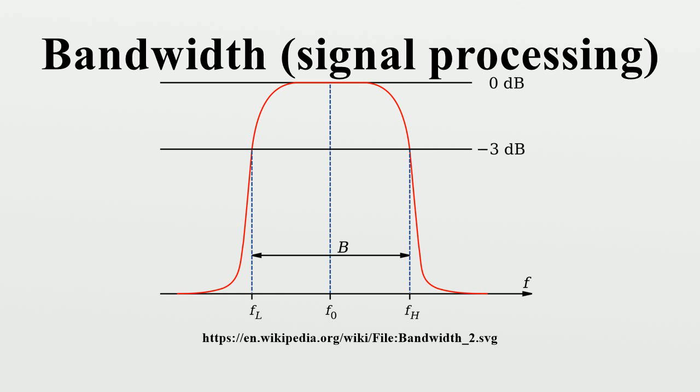In signal processing and control theory the bandwidth is the frequency at which the closed-loop system gain drops 3 dB below peak. In basic electric circuit theory, when studying band-pass and band-reject filters, the bandwidth represents the distance between the two points in the frequency domain where the signal is of the maximum signal amplitude.